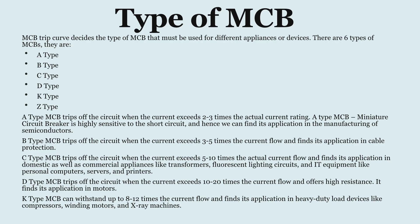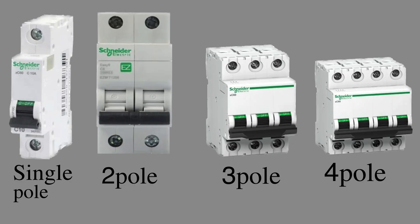There are six types of MCB: Type A, B, C, D, K, and Z. Type A MCB trips when the current exceeds two to three times the actual current rating. Type B trips at three to five times and is used basically for cable protection. Type C trips at five to ten times and is mostly used for transformers, lighting, cable, IT equipment, personal computers, etc. Type D MCB can trip at ten to twenty times the actual current.